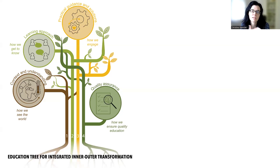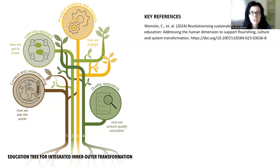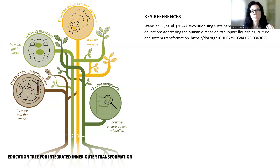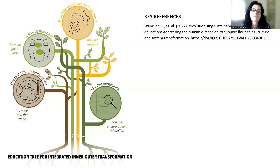The education tree for inner-outer transformation summarizes the outcomes of several years of research in the field. We published these outcomes in 2024 in an article titled 'Revolutionizing Sustainability Leadership and Education: Addressing the Human Dimension to Support Flourishing Culture and System Transformation.' After the article was published, we continued to improve the layout of the tree, and the figure you see here is the latest version. I will now briefly explain the four key ingredients, because they form the scientific basis of the MBST course.